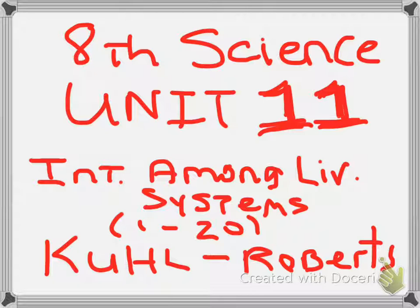Number nineteen: Which two organisms are most likely to be competitors in the diagram above? A) chipmunk and cow, B) snake and hawk, C) snake and badger, D) chipmunk and badger.